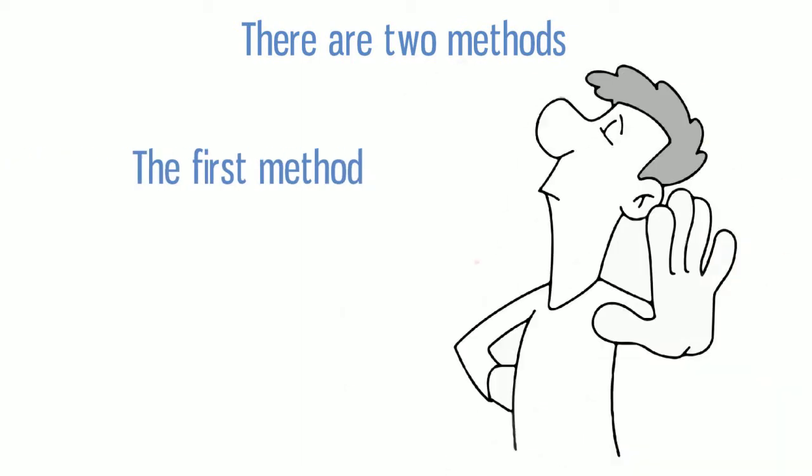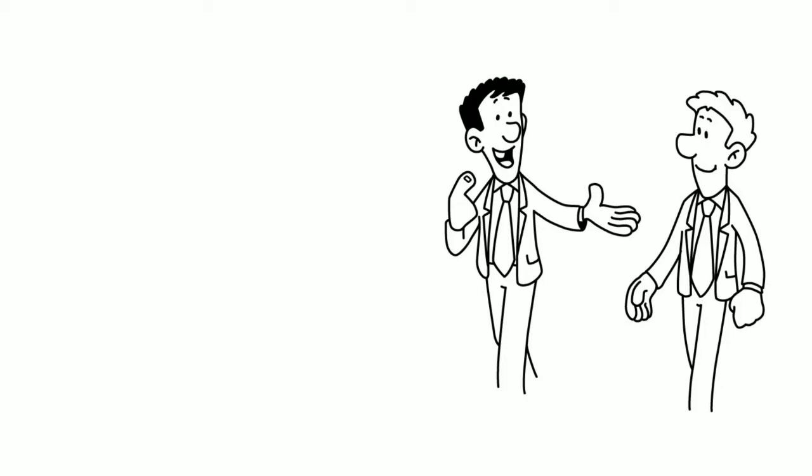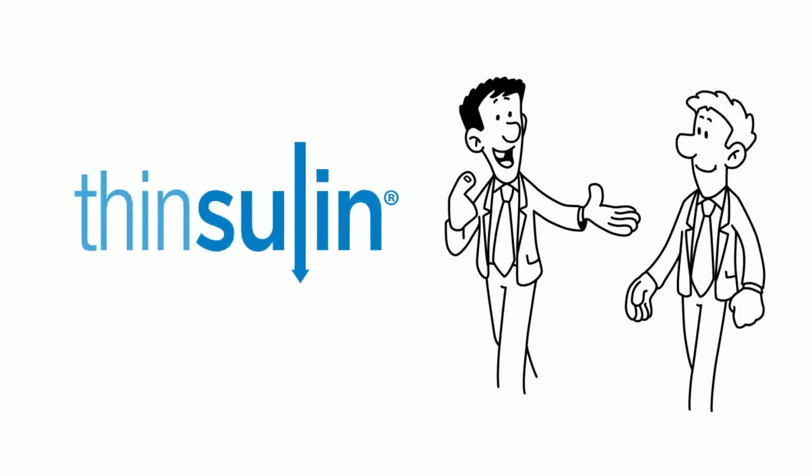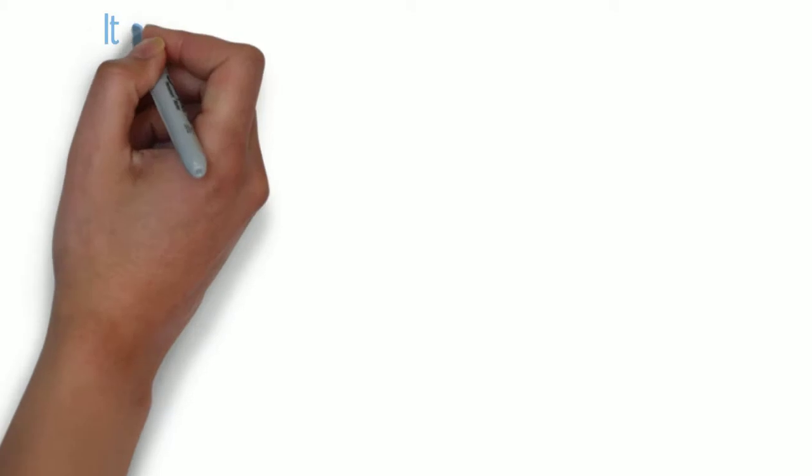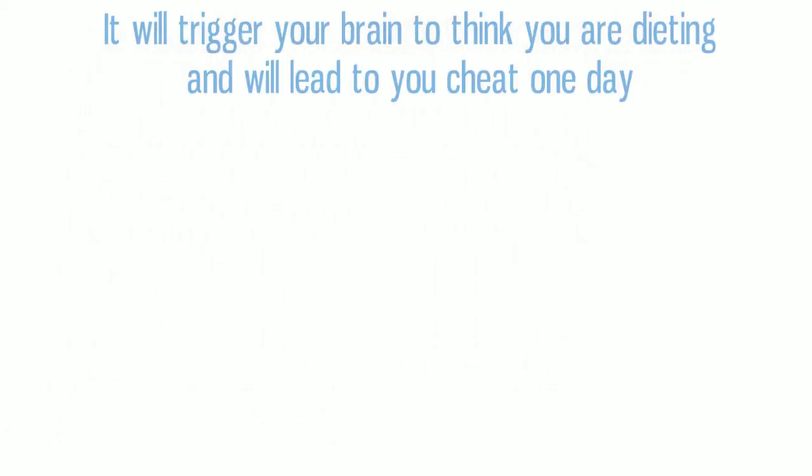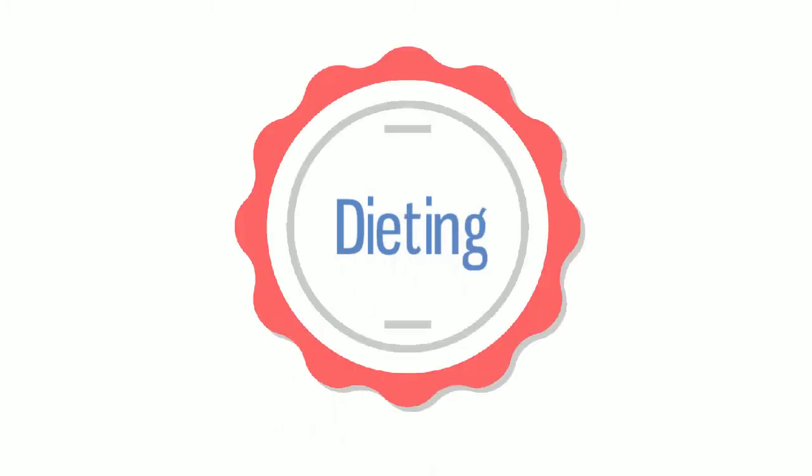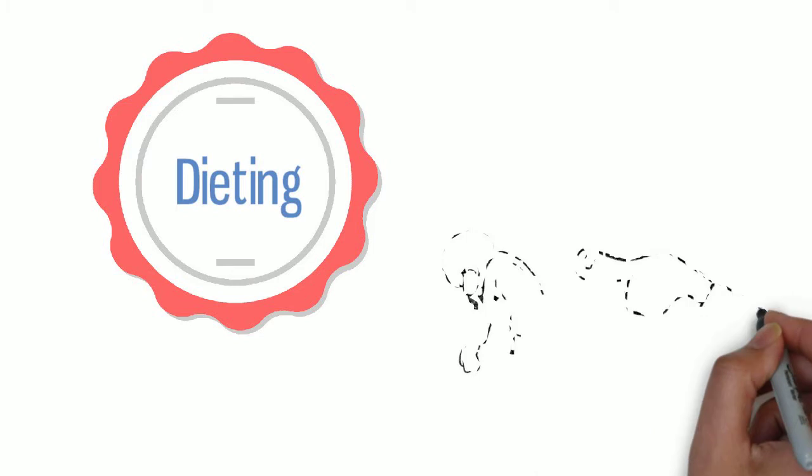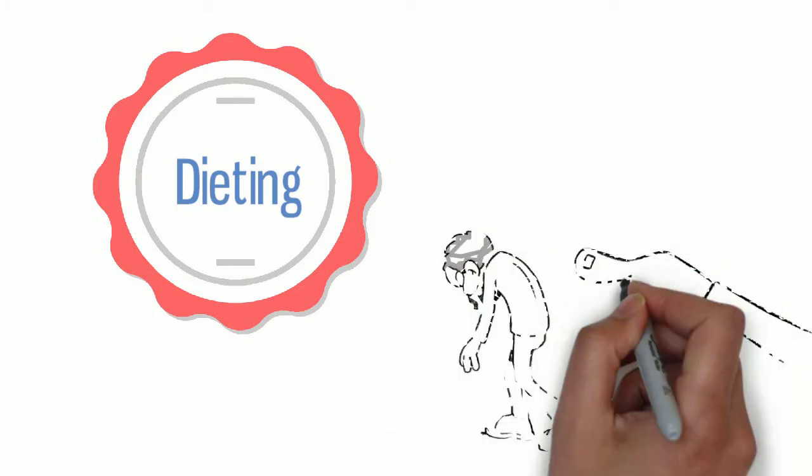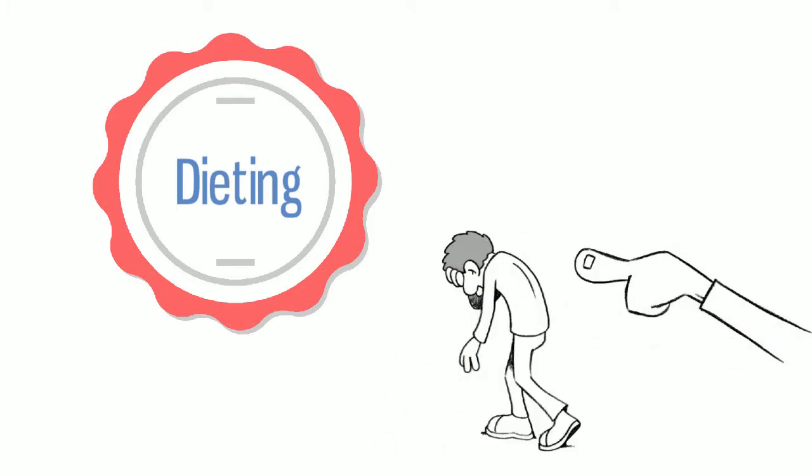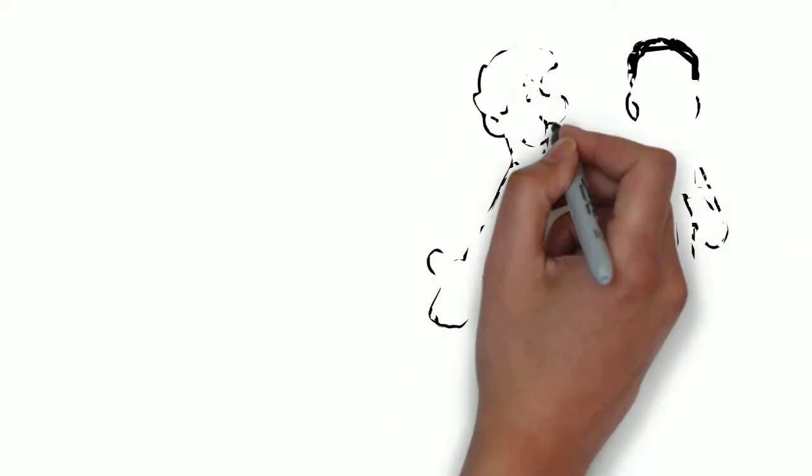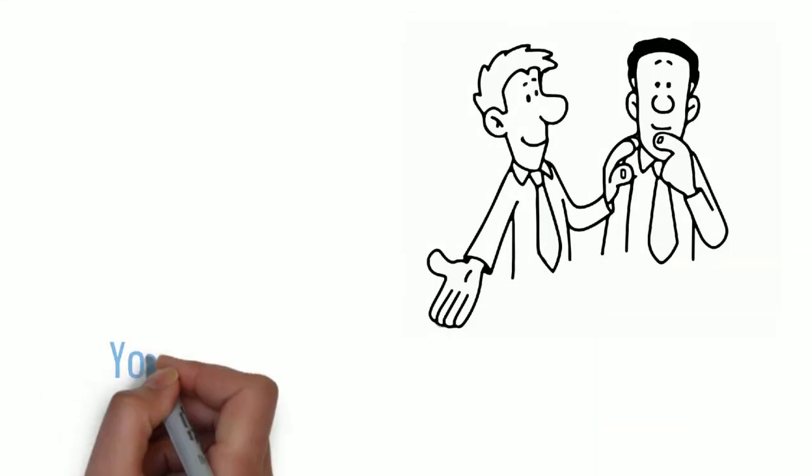The first method is to avoid the word dieting. If anyone asks why you are losing weight, tell them that you are on Thinsulin. Absolutely do not use the word diet. It will trigger your brain to think that you are dieting and lead you to cheat one day. Dieting is that vicious cycle of punishment by starving yourself and then rewarding yourself by cheating, followed by guilt because you overate and then you have to punish yourself again. To completely remove the dieting mindset, you need to avoid using the word dieting in the first place.